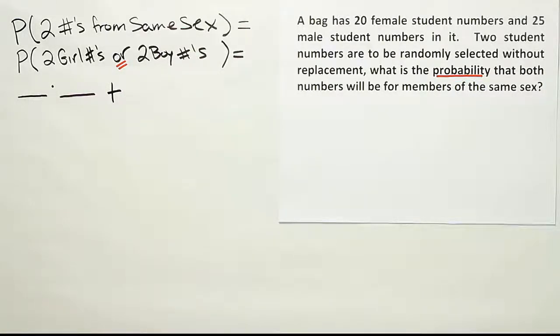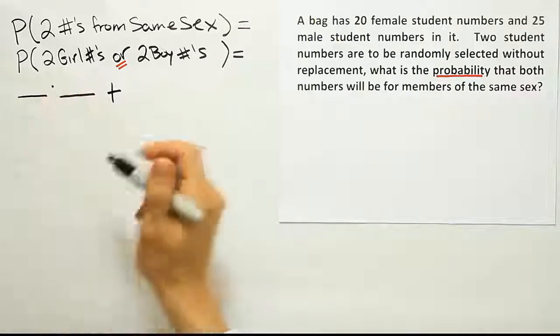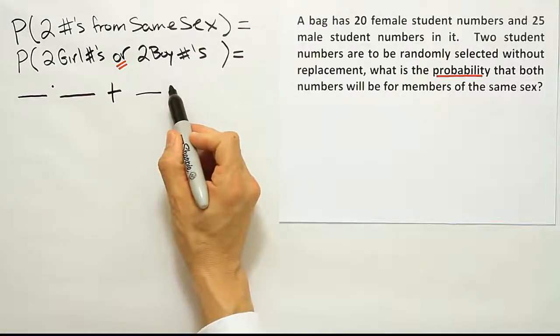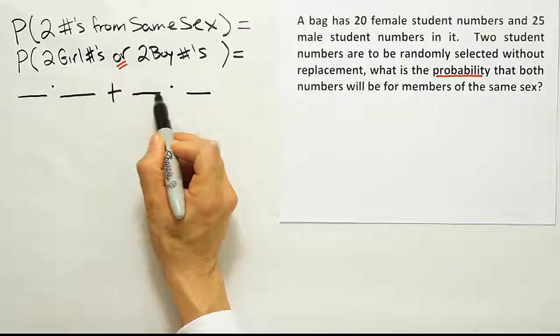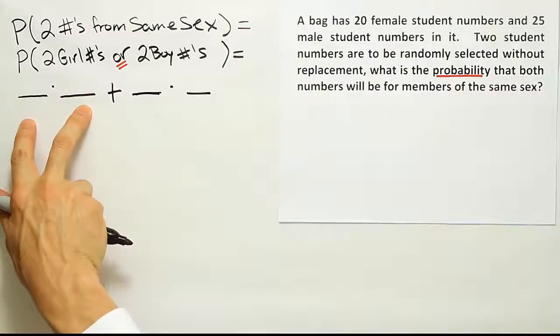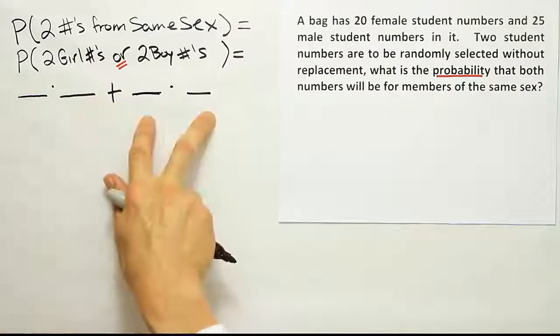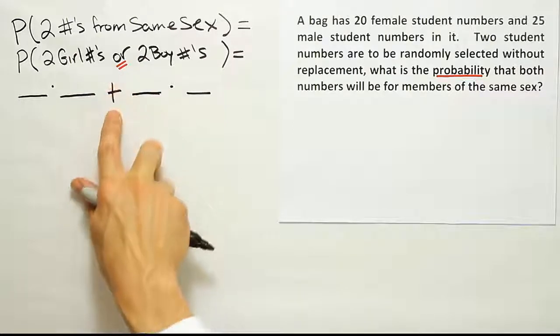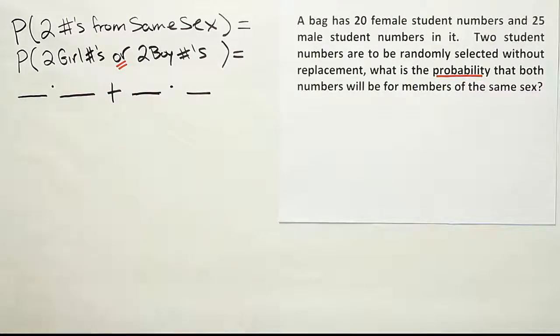So in that case, what we're going to do is actually work out two different scenarios and add them together. But since both of those scenarios will involve selecting two student numbers, we're going to have multiplication rule for both of those. But then the word or means we should add the results of the two multiplication rule problems. So this is a hybrid rule.